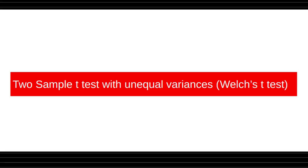In the last class we saw the two-sample t-test with equal variances. Now we will see the two-sample t-test with unequal variances. This test is also known as Welch's t-test.